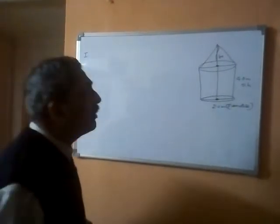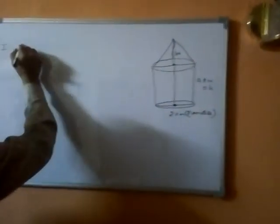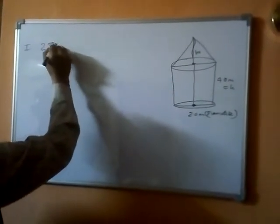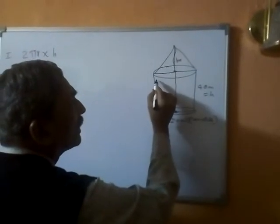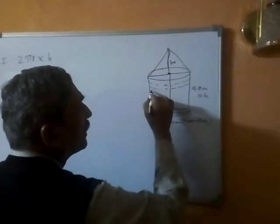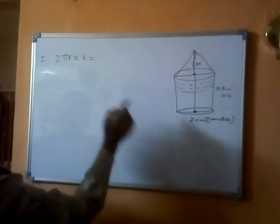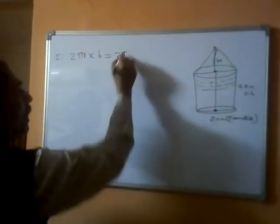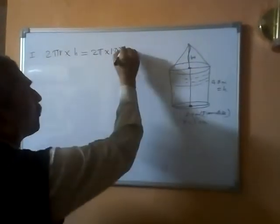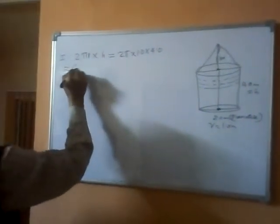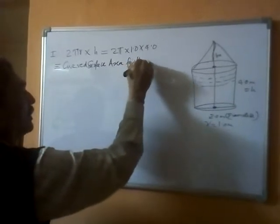The curved surface area of the cylinder can be obtained by simply considering the circumference of the circle at the top, which is 2πr, multiplied by the height h. So the curved surface area is 2πrh. Putting in the figures, this is 2π × 1.0 × 4.0, which gives us 8π as the curved surface area for the cylindrical part of the tent.